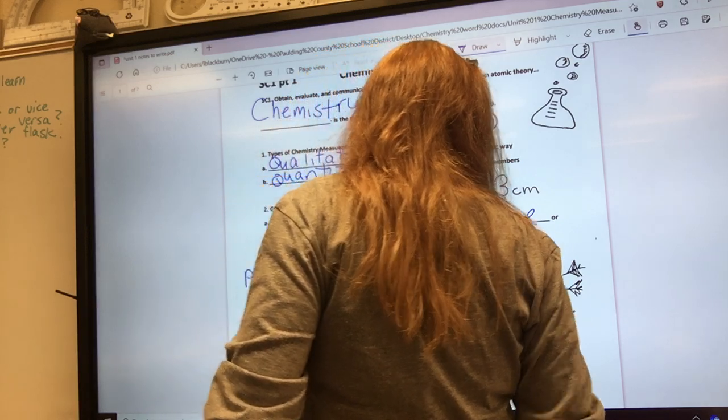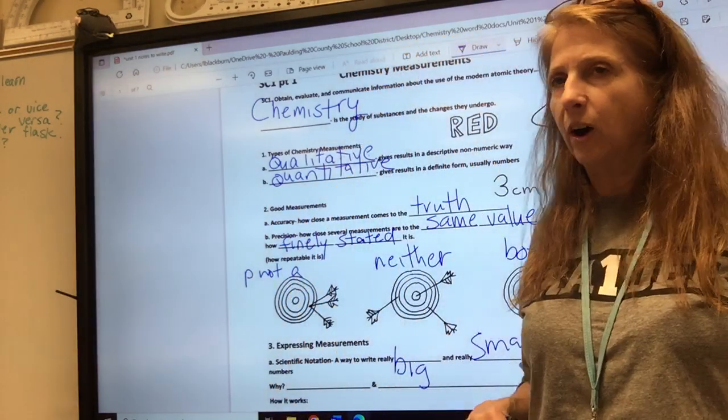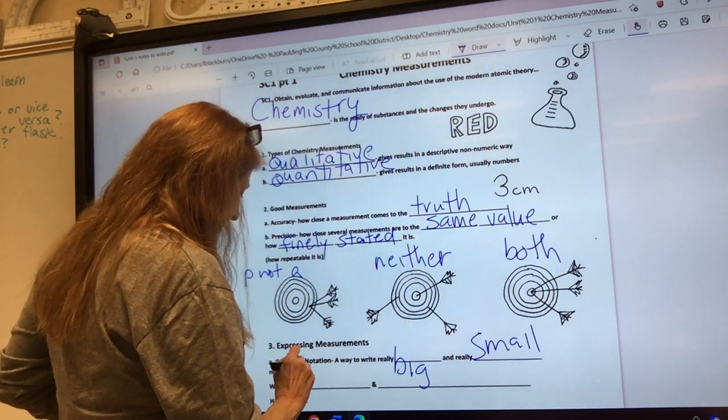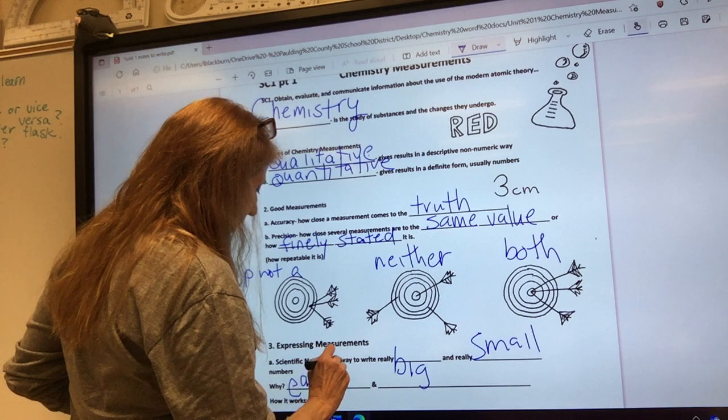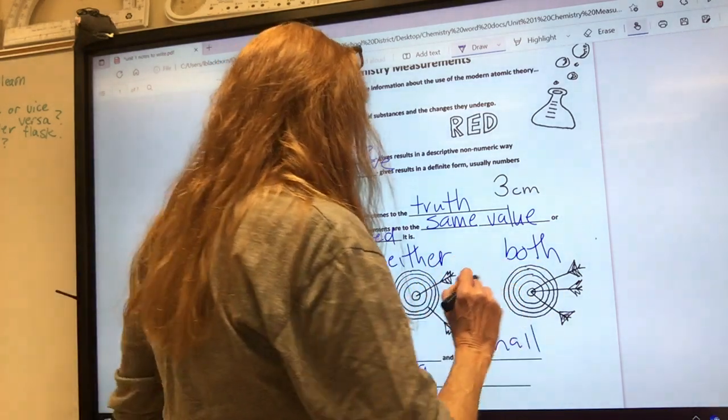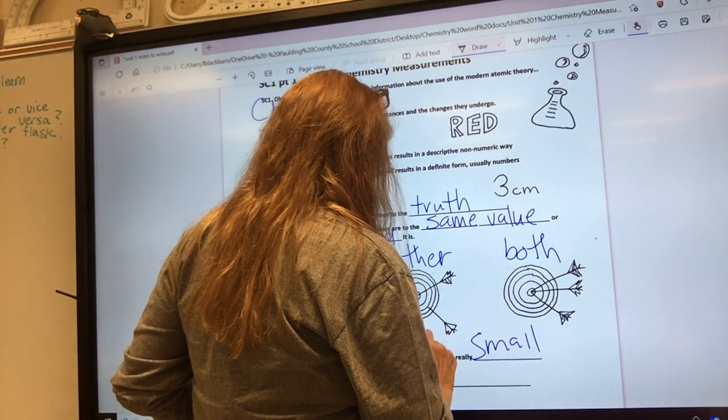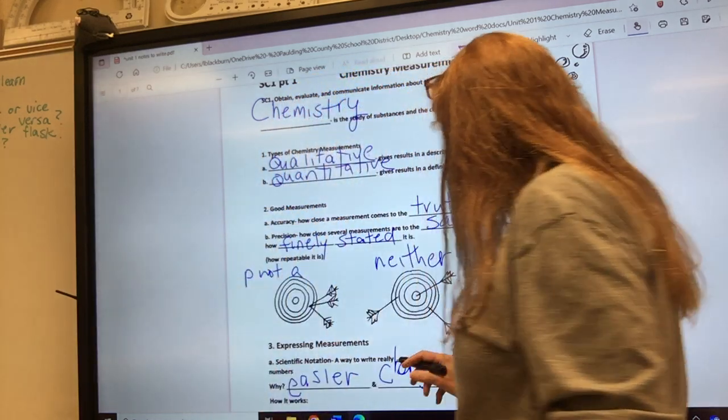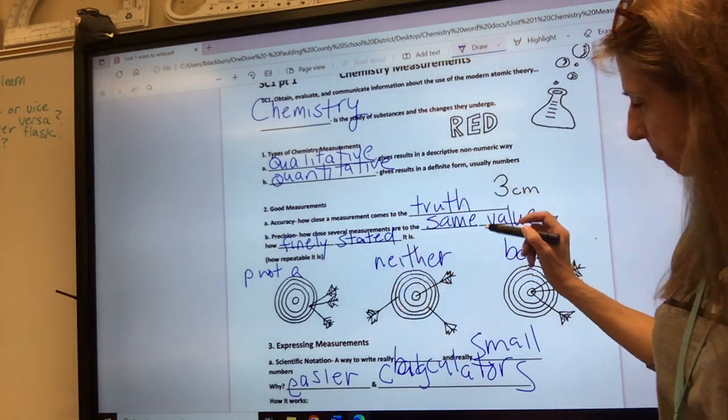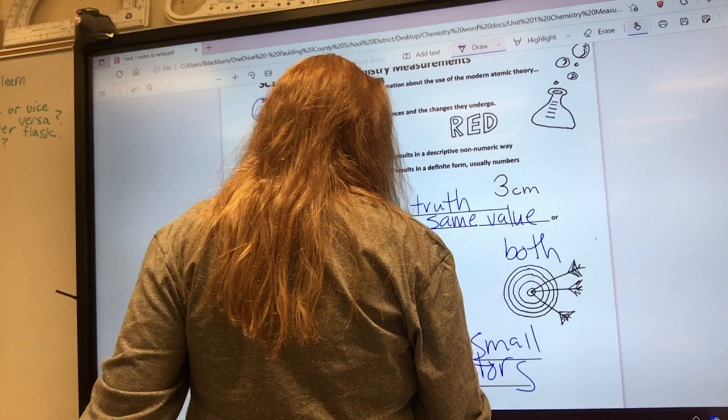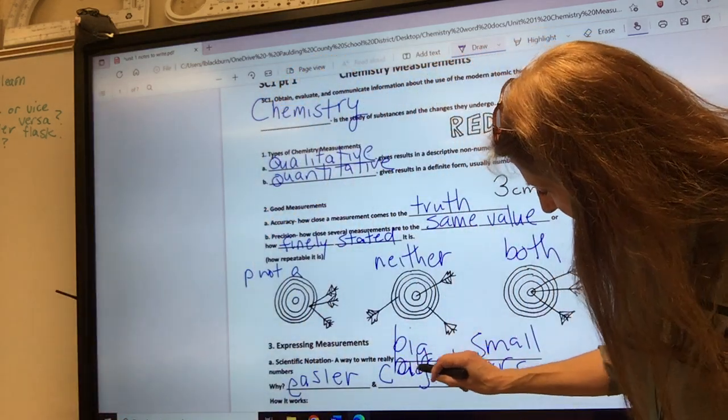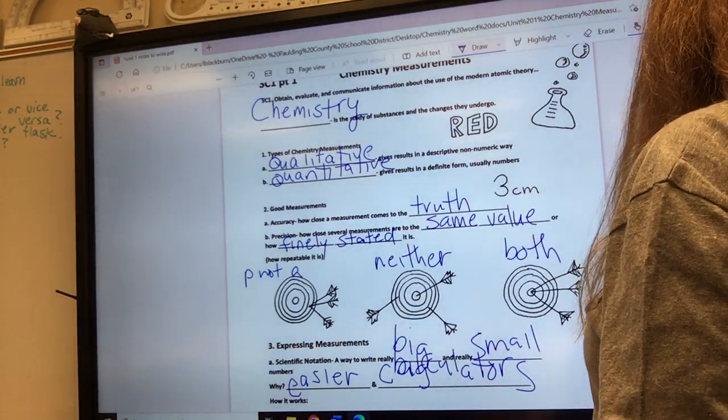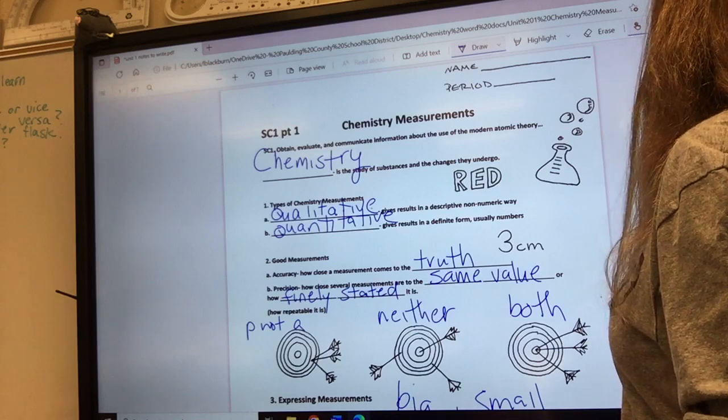Expressing measurements. Scientific notation is a way to write really big and really small measurements. Why do we do this? Because it's easier and because of our calculators.